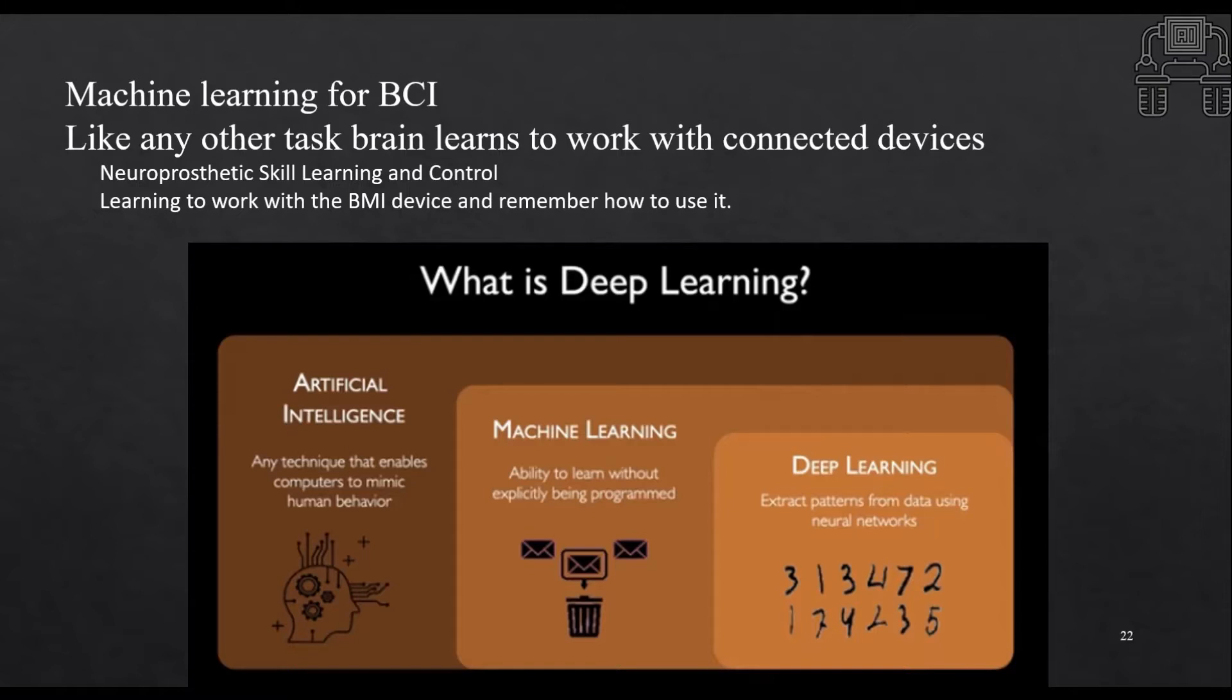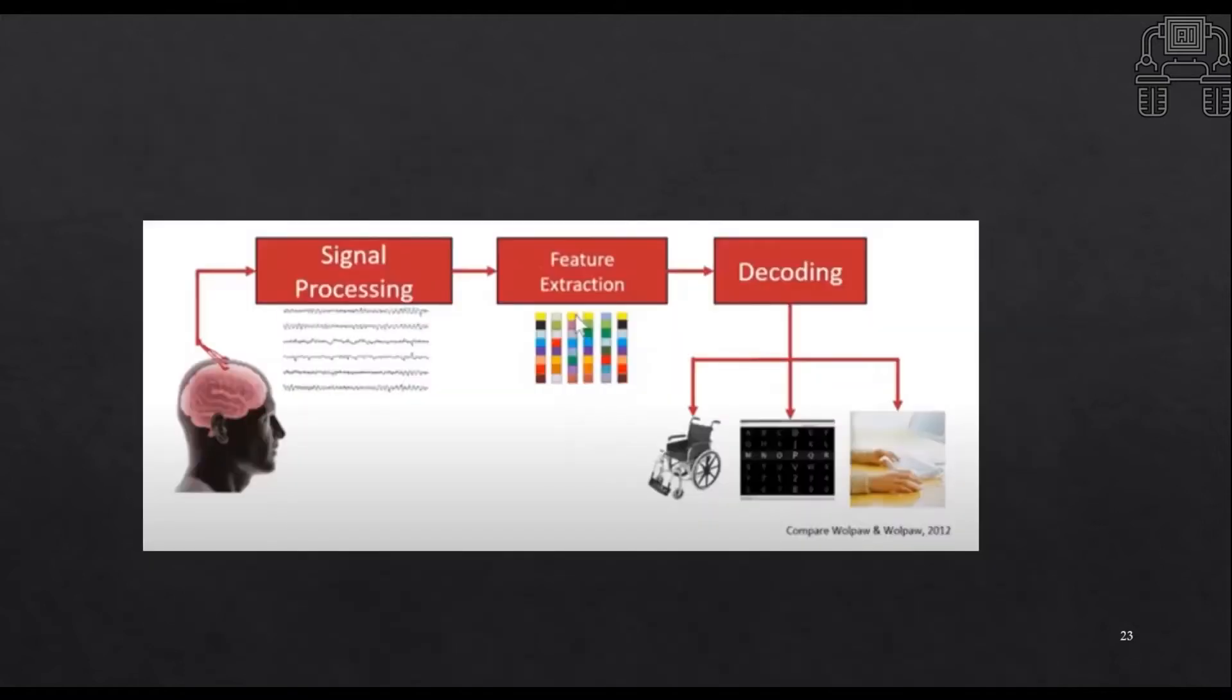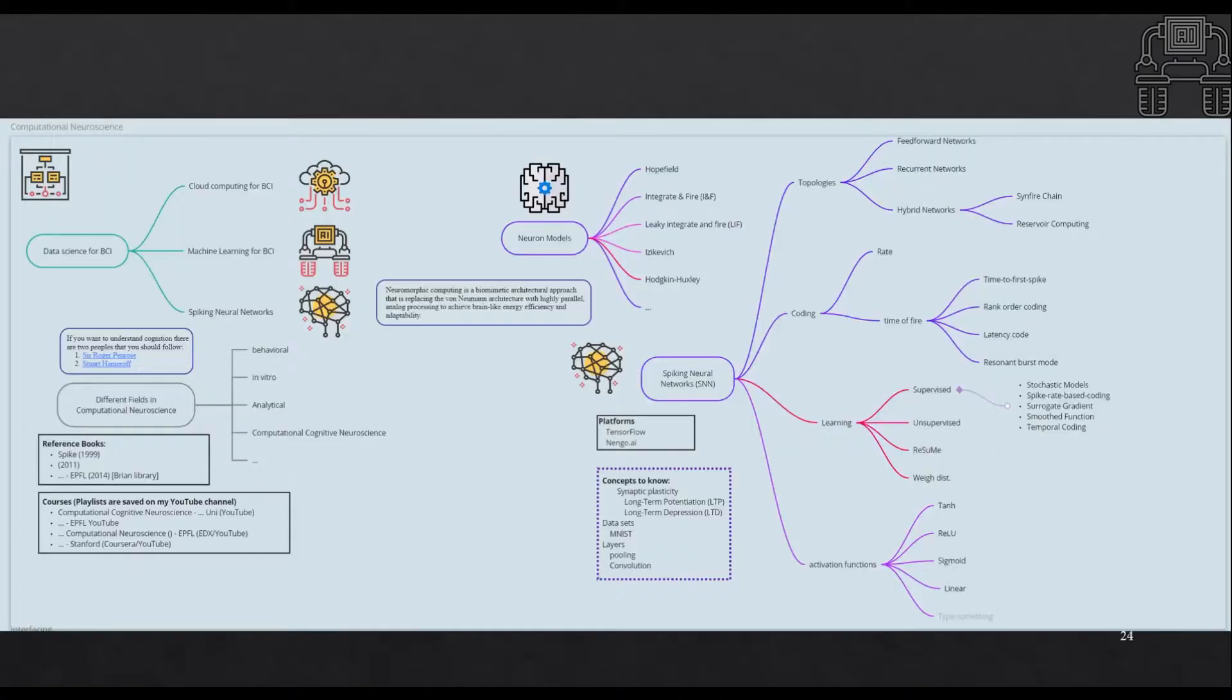In the decoding part it highly depends on the biological aspect of the brain and how it works. And then we do the computational model and after those computational models we do the decoding model. These are highly related to the neuroscience part of it. So if I want to explain we should first take a look at those parts. So let's move on to the next part.